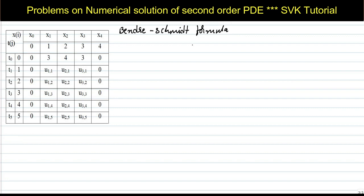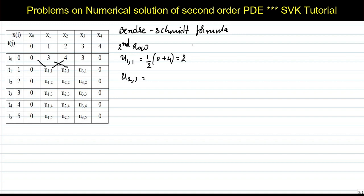Using the Schmidt (Bain-Ray-Smith) averaging formula to find the second row: u(1,1) = (1/2)(0 + 4) = 2. u(2,1) = (1/2)(3 + 3) = 3. u(3,1) = (1/2)(4 + 0) = 2.